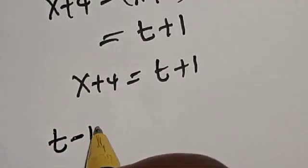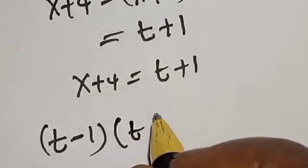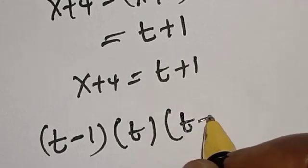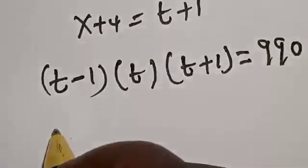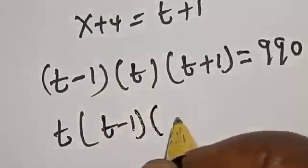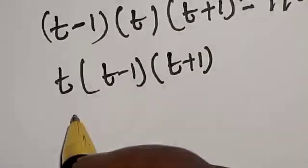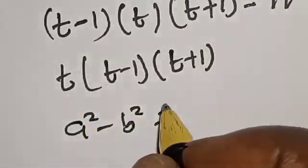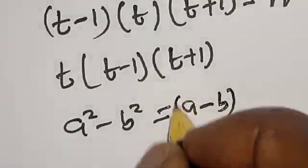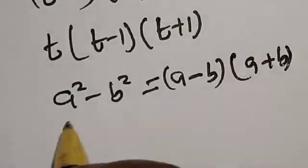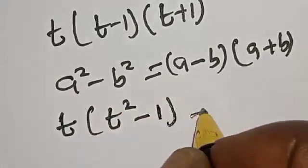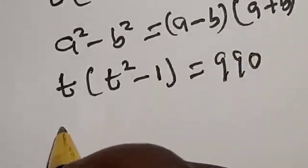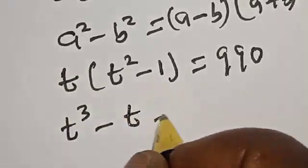Substituting, we have (t − 1) · t · (t + 1) = 990. Let's rearrange: t multiplied by (t − 1)(t + 1). This is a difference of two squares — a² − b² = (a − b)(a + b) — so (t − 1)(t + 1) = t² − 1. Therefore t(t² − 1) = 990, which expands to t³ − t = 990.